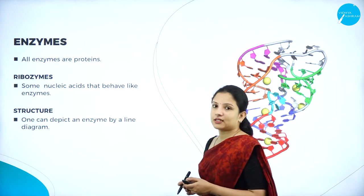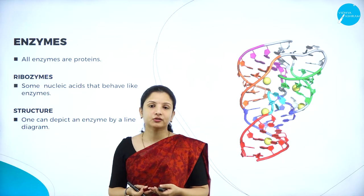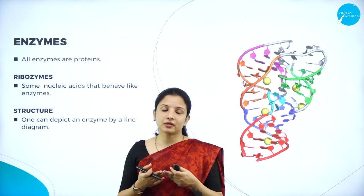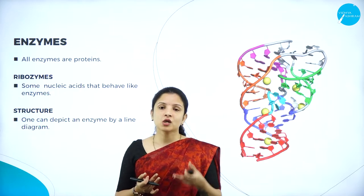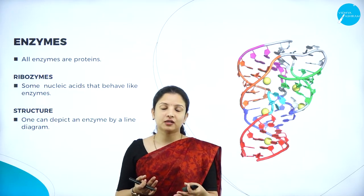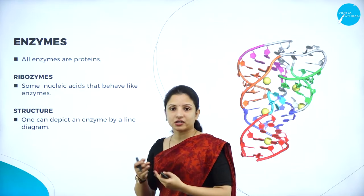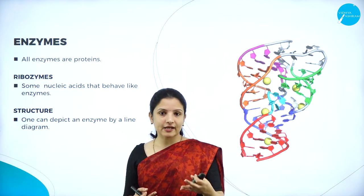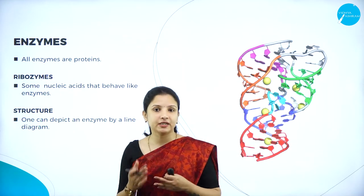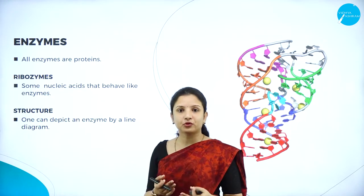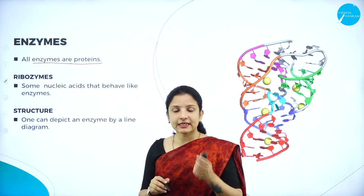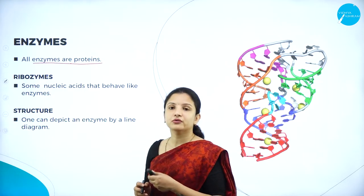In today's class we shall concentrate on enzymes: how enzymes bring about a chemical reaction, what substrates and products are, what is the active site in an enzyme, and the transition state. Enzymes are made up of chains of amino acids because they are nothing but proteins. Any compound which alters — specifically speeds up — the rate of a chemical reaction is an enzyme.